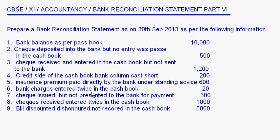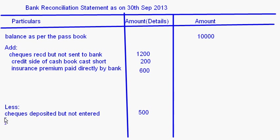Fifth: bank charges entered twice in the cash book. The actual bank charges are 20 rupees but it has been entered twice, so it appears as 40 rupees. The cash book balance goes down by an extra 20 rupees — it is less by 20 rupees. So this should be deducted. Bank charges: 20 rupees.